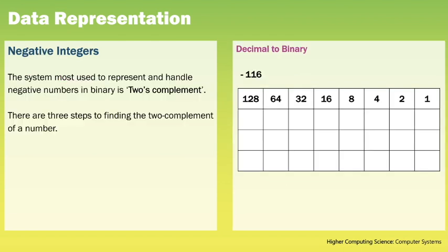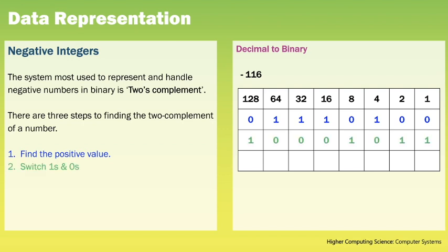At Higher we also need to know how we store negative whole numbers in binary. The system most used to represent and handle negative numbers in binary is 2's complement. There are three steps to finding the 2's complement of a number. Taking the example of minus 116, we start by finding the positive value for 116, then flip that number so every 0 becomes a 1 and every 1 becomes a 0, and lastly we add 1 to the answer.